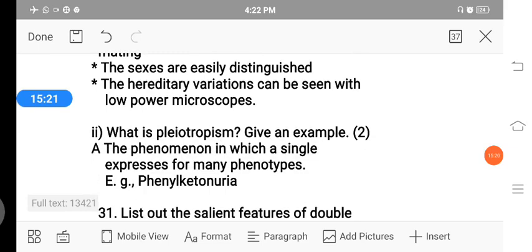One more question is, what is pleiotropy? Give an example. The phenomenon in which a single gene is able to express many phenotypic characters is called pleiotropy. Example: phenylketonuria, a disease.